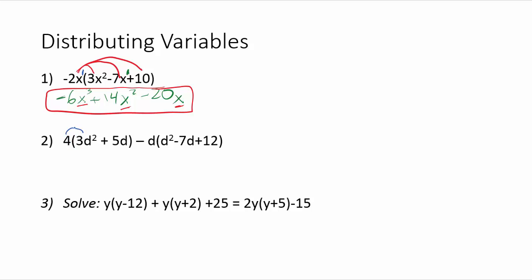So I've got a 4 on the outside that I'll have to distribute in. This gives me a 12d squared plus 20d. So that takes care of the first parentheses minus now I'm just going to have to bring a d into each of these.